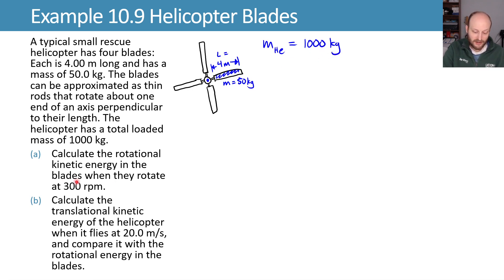We want to know the rotational kinetic energy in the blades when they rotate at 300 rpm. Let's write that down 300 rpm, and note that we generally want to always convert to radians per second. That conversion is the same one we've been doing, 2 pi over 60 to get from rpm to radians per second.